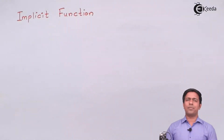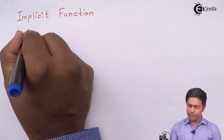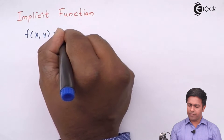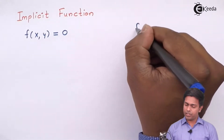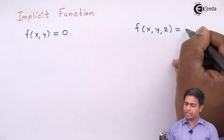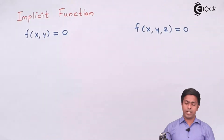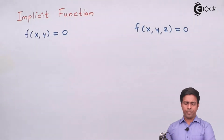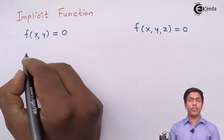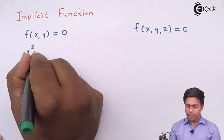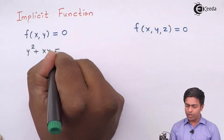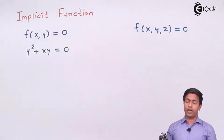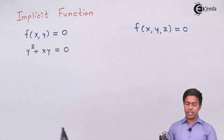To start this concept, let's say if I have a function of x and y equal to zero, or a function of x, y, and z equal to zero, and somebody is asking me to find out the value of dy by dx — how to get that value? This type of question we have done in 12th standard. Let's take an example so that you'll remember. We have a function like y² + xy = 0, and somebody is asking us to find out dy by dx. What we do is differentiate each term with respect to x.